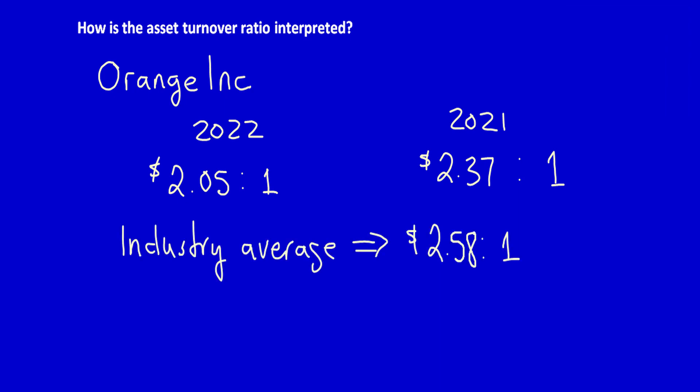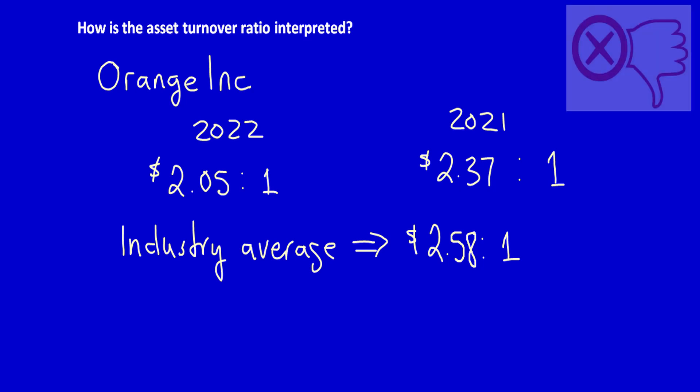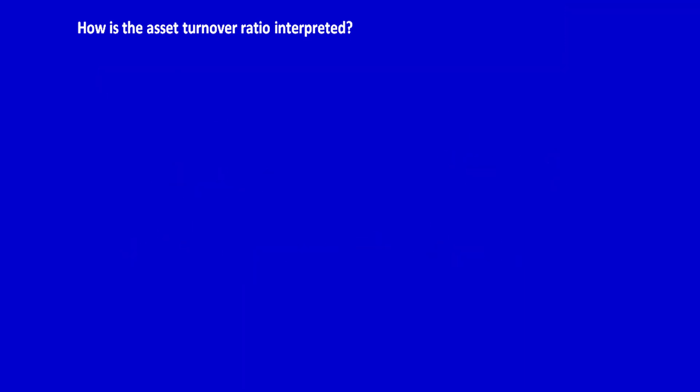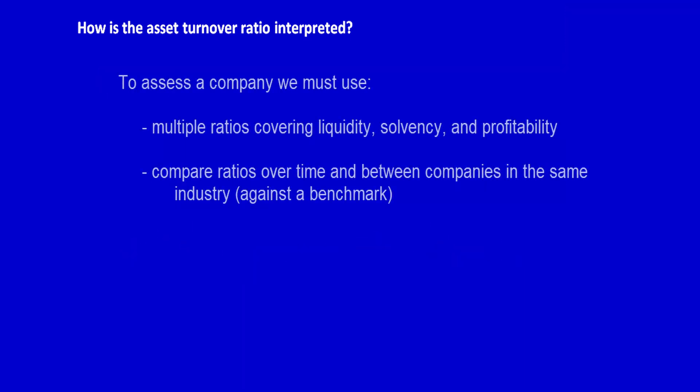Now let's assume that the industry average is two dollars and fifty-eight cents, meaning that for every dollar of assets, companies on average have two dollars and fifty-eight cents of revenue. In that case, Orange's ratio is poor — both declining and lower than the industry average — which might be cause for concern.